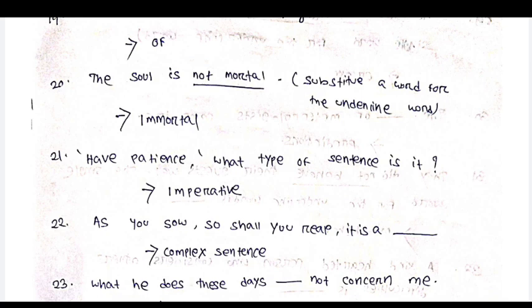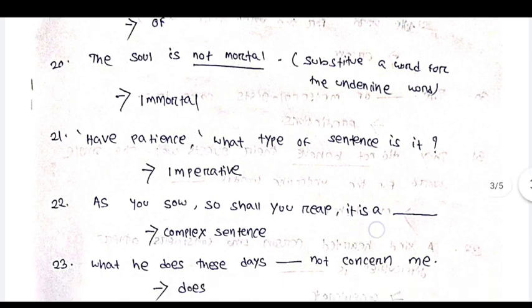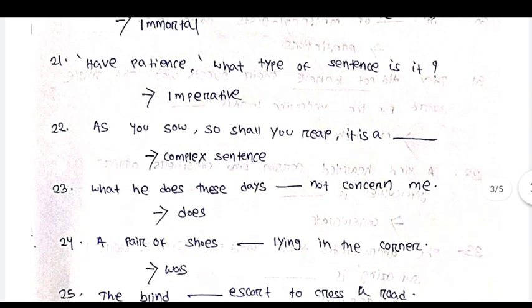Have a sense. What type of sentence is that? It has an imperative sentence. As you show — show your work. It is a dash — it is a complex sentence.